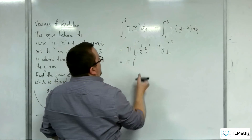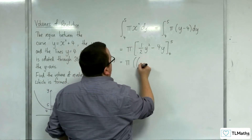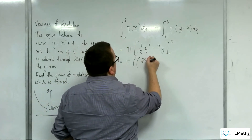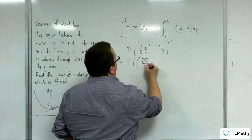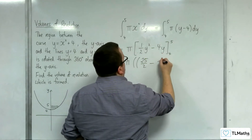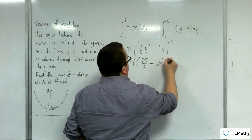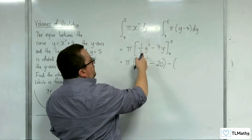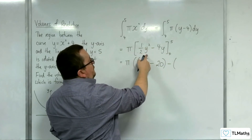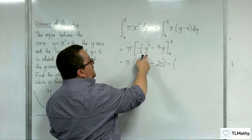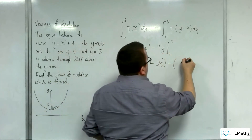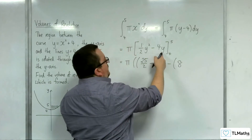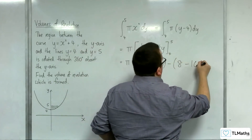So I want to substitute in the 5 first. We're going to have one half of 5 squared, so 25 halves. Take away 4 lots of 5, which is 20. And take away — substituting in the 4 — we get a half of 4 squared. 4 squared is 16, half that's 8. And then take away 4 lots of 4, so take away 16.